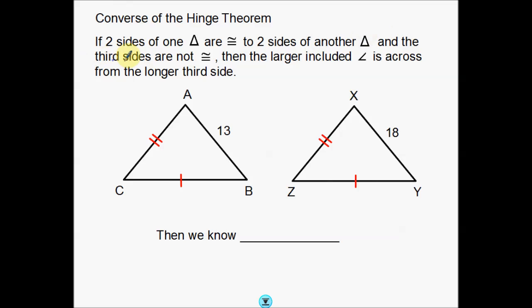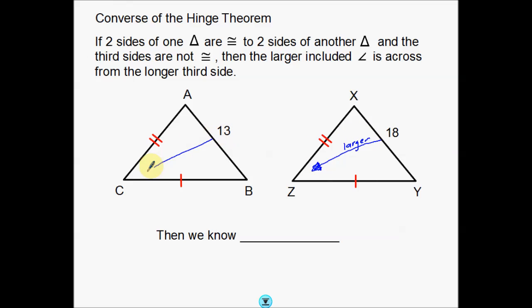And the third sides are not congruent. So notice we've got this 13 and this 18 — it's obvious the third sides of these triangles are not the same. Now that we've met that criteria, then the larger included angle is across from the longer third side. So this 18 is our larger side, which makes the opposite angle larger. This 13 is the smaller side, making this angle over here smaller.